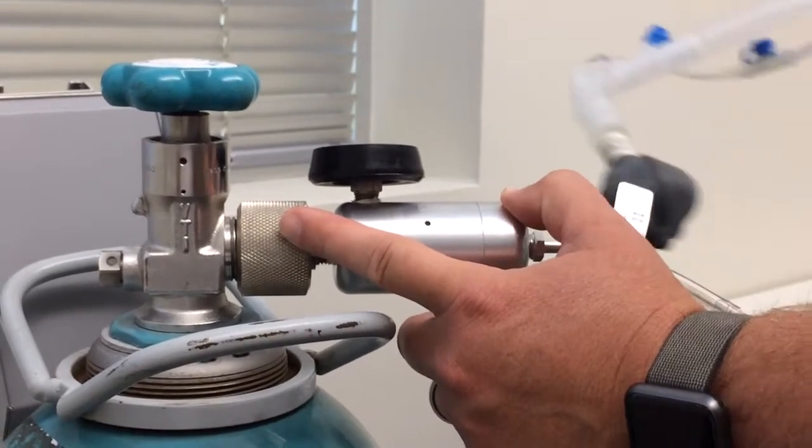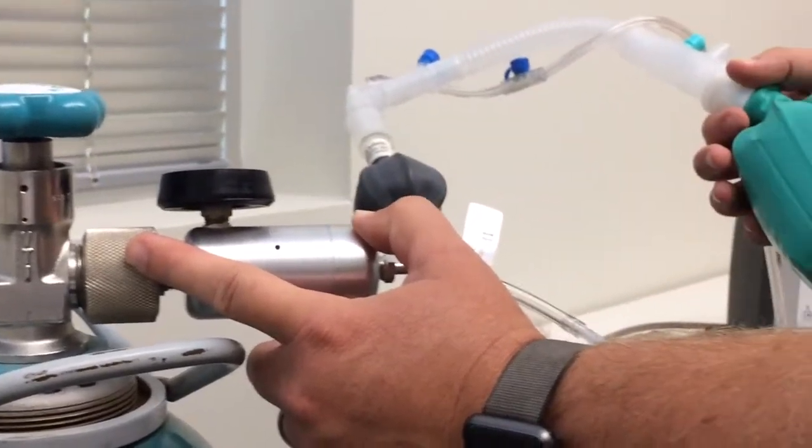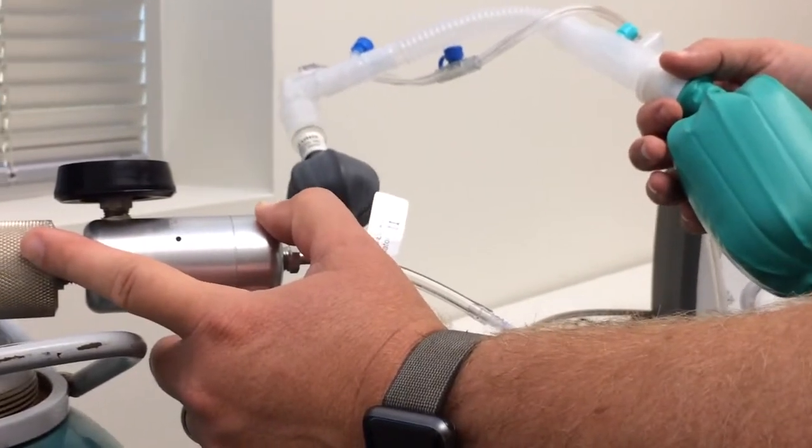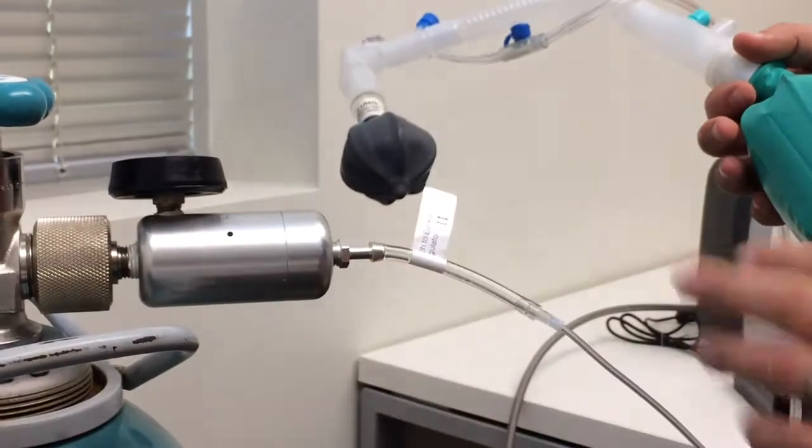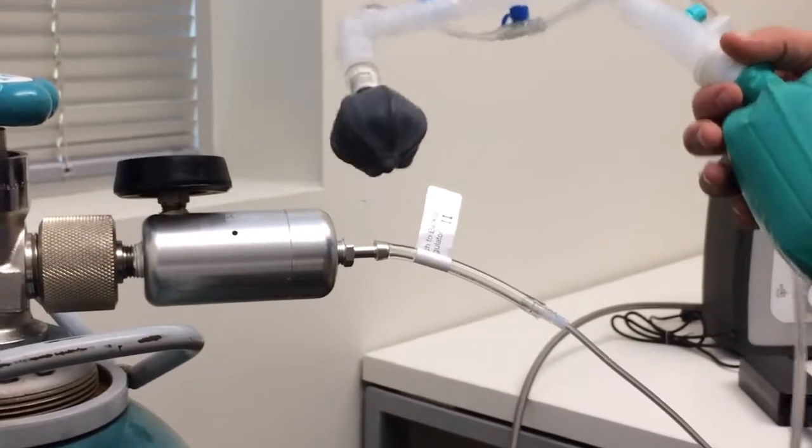Therefore, when you run 10 liters per minute of oxygen through the system, you're given 20 parts per million having that hooked directly to the tank, and you don't have to have the Aranox with you to do this.